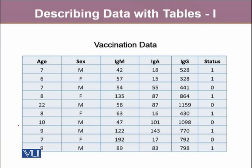Each and every variable has different characteristics. If we look at the variable age, age is a quantitative variable that is measured on a ratio scale. Sex is a categorical variable which has two attributes: male and female. IgM, IgA, and IgG are all quantitative variables, whereas the last variable, status, is also a categorical variable.